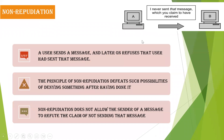Next is non-repudiation. Non-repudiation means that user A sends some content to user B, and after the message has been received, user A cannot refuse or deny having sent that message. For example, when chatting, we sometimes unknowingly send a message and then deny sending it. Non-repudiation does not allow the sender to refuse or deny the message they sent.